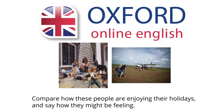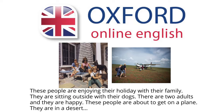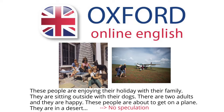I'm going to give you an example answer and I want you to think about how it could be improved. Here's a weak answer: 'These people are enjoying their holidays with their family. They are sitting outside with their dogs, there are two adults and they're happy. These people are about to get on a plane, they're in a desert.' What's wrong with this? Firstly, I'm simply describing the pictures, but we talked about how important it is to compare and contrast. Secondly, I'm not using any linking words to do this. I'm also not speculating — again, I'm simply describing what I'm looking at. In addition, I'm going way too slow.